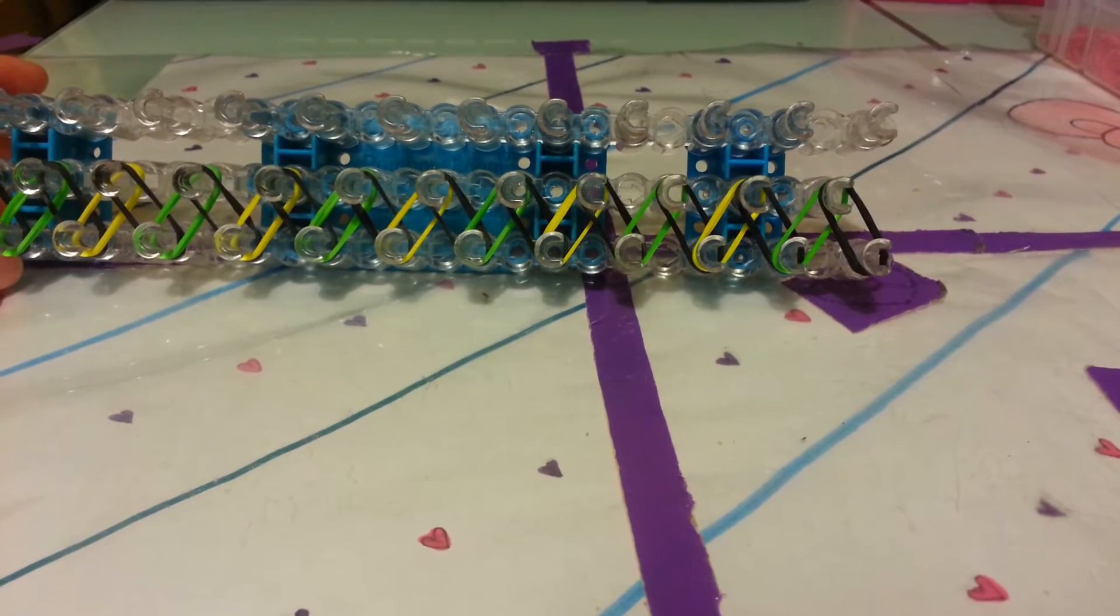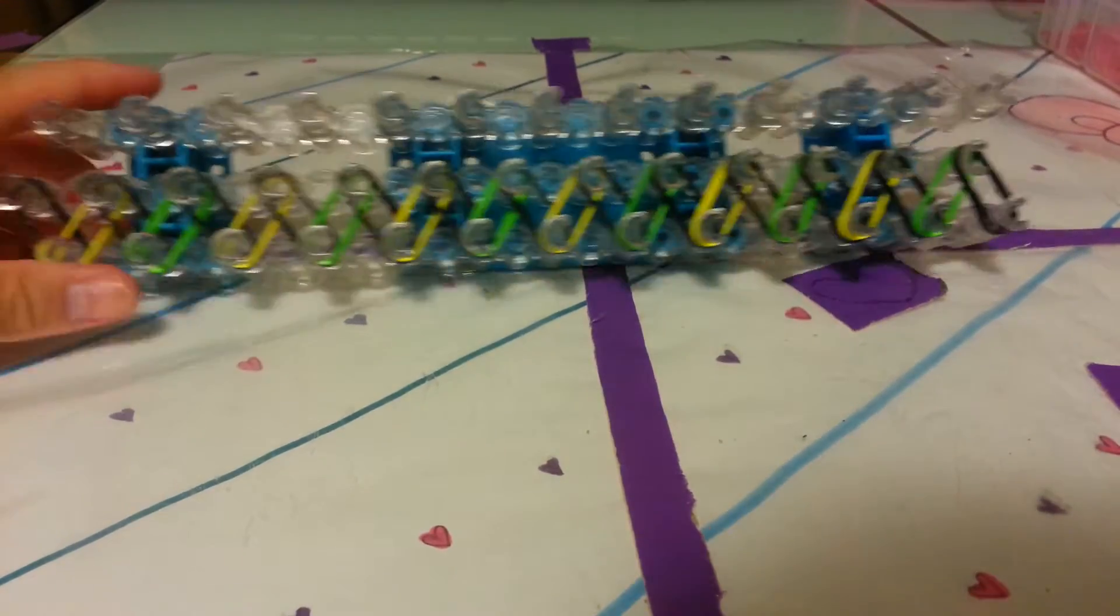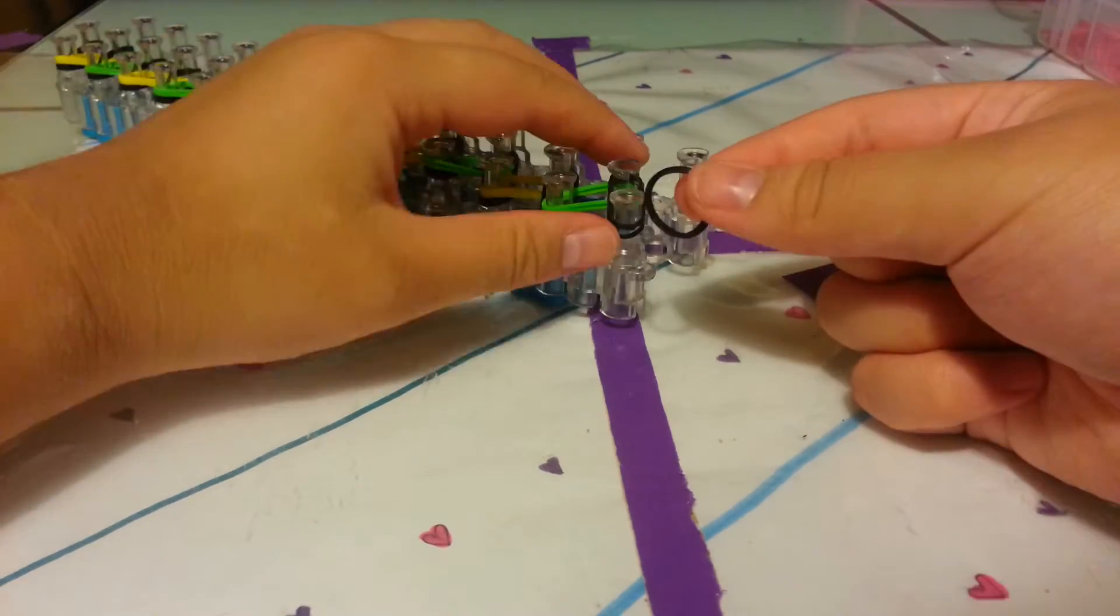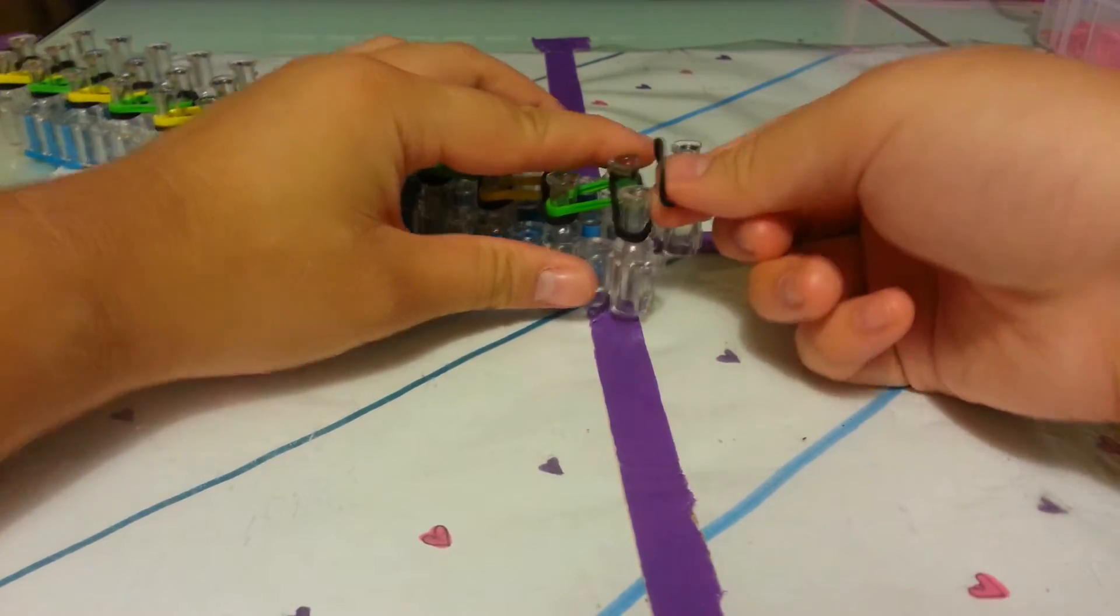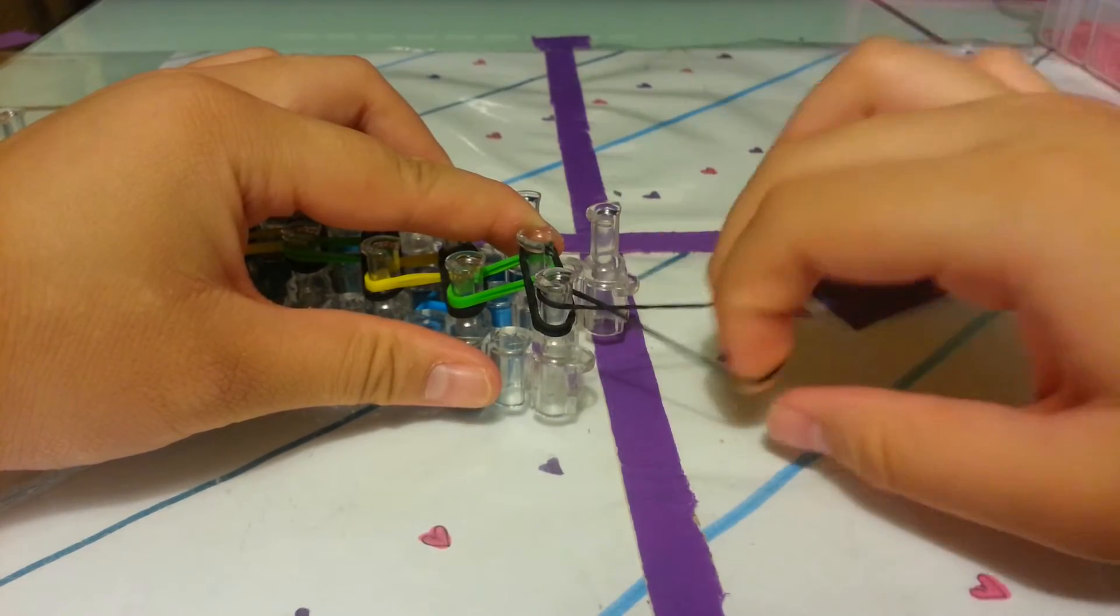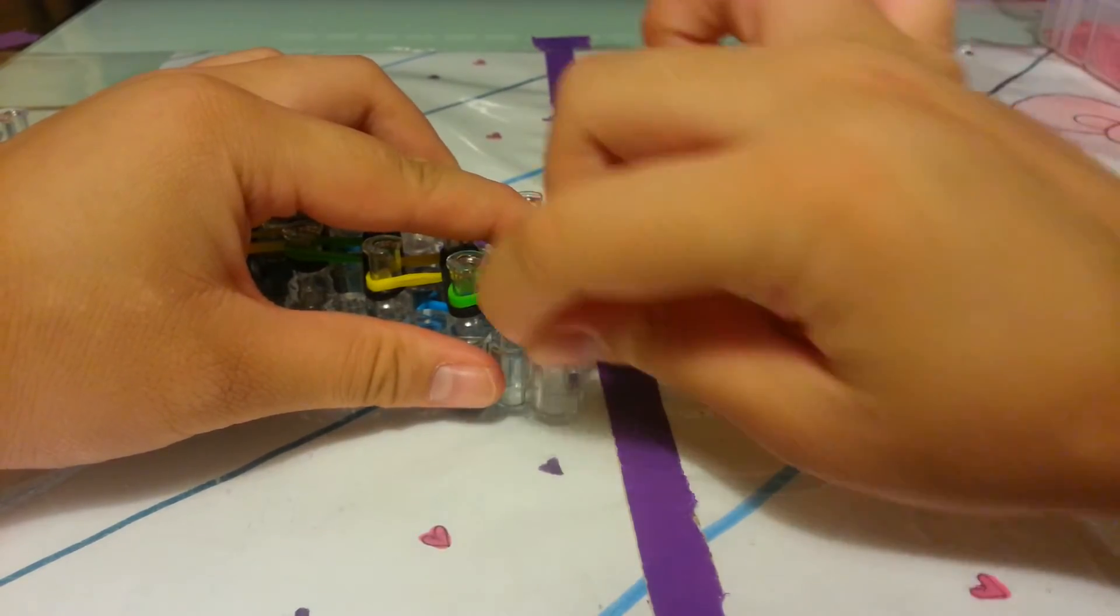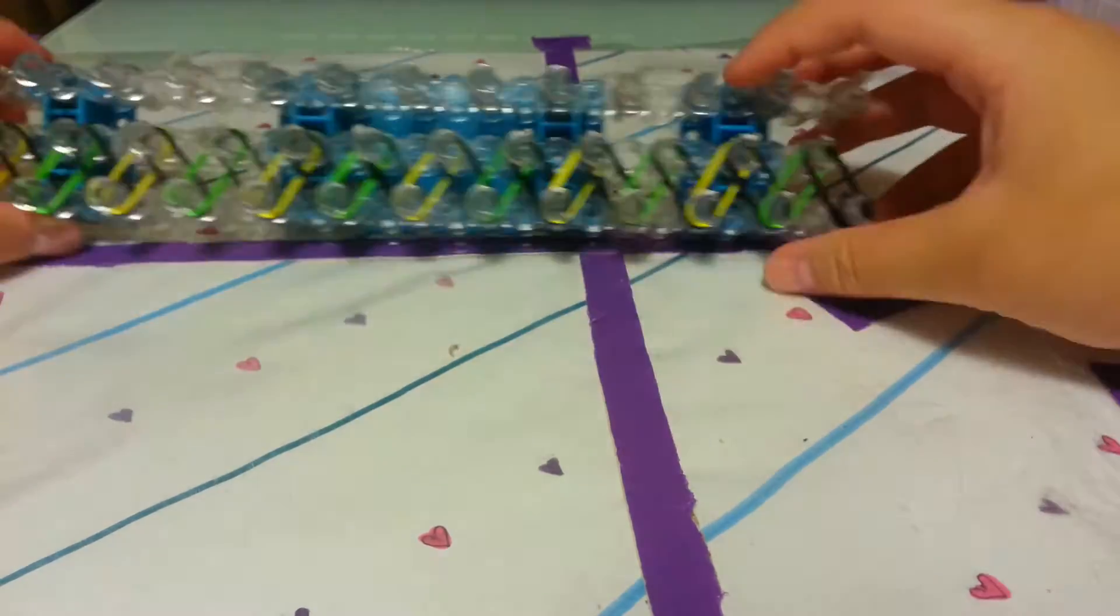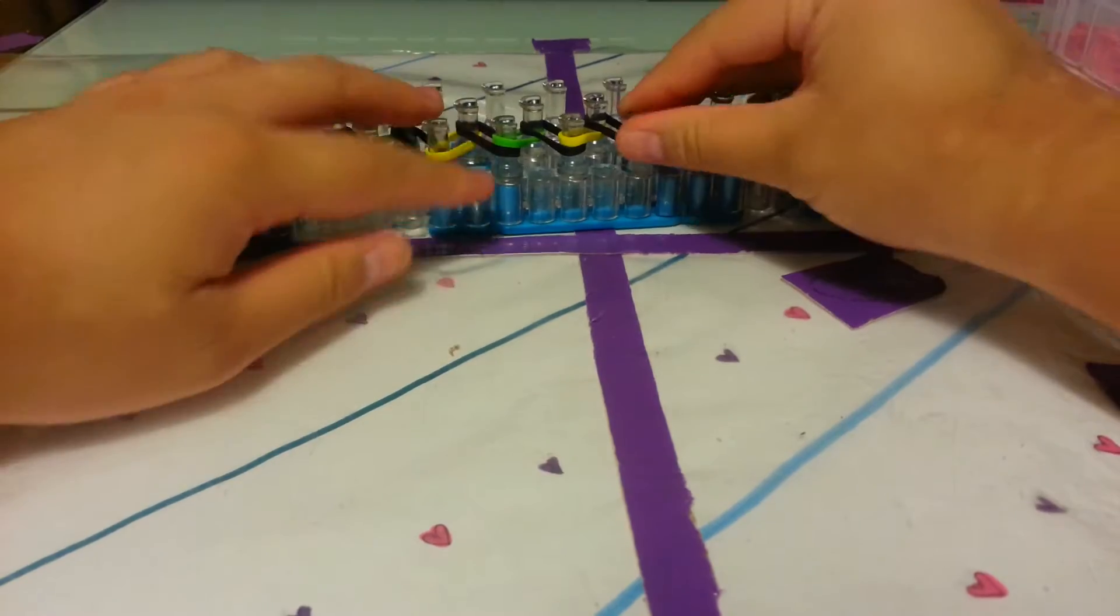This is what your loom should look like when you're finished. Now we want to place our cap band. I'm going to take a single black band and twist it around this peg twice. So there's our cap band, and now you can go ahead and push your bands down.